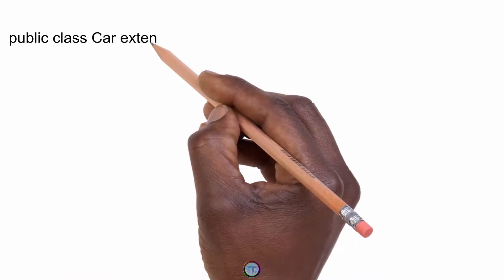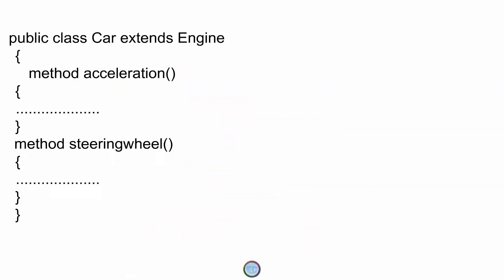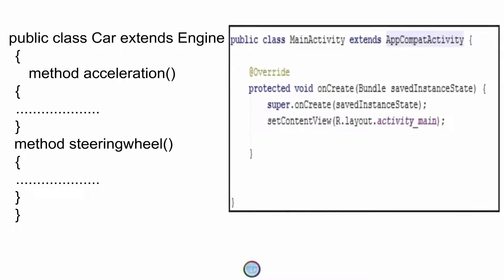Now if I write the above code as: public class Car extends Engine, and inside the Car class I have two methods — acceleration and steering wheel — and compare this with the original source code, then the MainActivity class is like your Car class which is empty, and the AppCompatActivity is like the Engine class which basically consists of two methods.